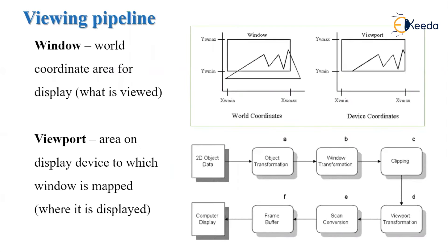In the introduction, we have to see two important terms: window and viewport. A window is a world coordinate area for the display — it is the thing from which we can see the scene. It is a rectangular window, as we have seen in this figure. We are seeing a specific part of the screen from the window. A viewport is the area on the display device to which the window is mapped — where we are going to display that particular area which we have seen through the window.